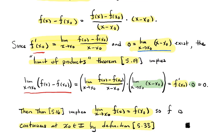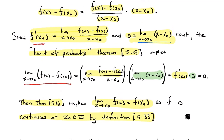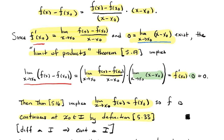So differentiable at a point implies continuous at a point. As a small corollary: if f is differentiable on the interval, then it's continuous on the interval, because that's just a statement about every point x₀. So differentiable functions are continuous.